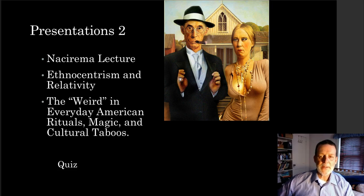To continue our introduction to cultural anthropology, we'll look at three brief presentations on the Nacirema, ethnocentrism, and relativity or relativism, and the weird in everyday American rituals, magic, and cultural taboos. The point here is to begin to rethink our taken-for-grantedness when it comes to U.S. culture. These will be followed by a short quiz.